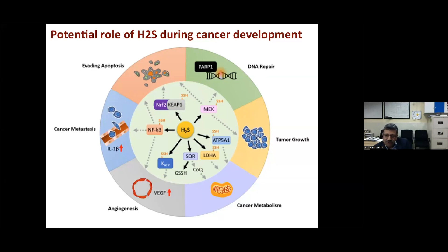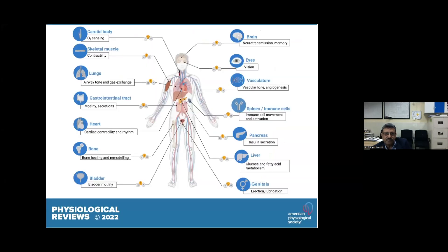In cancer, reducing H₂S levels can prevent metastasis and other hallmark changes. H₂S influences virtually every tissue in the body: skeletal muscle, lungs, gastrointestinal tract, heart, bone, bladder, genitals, liver, pancreas, immune system, vasculature, eyes, and brain — where it plays roles in neurotransmission, memory, and oxygen sensing.